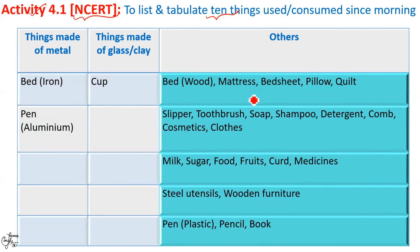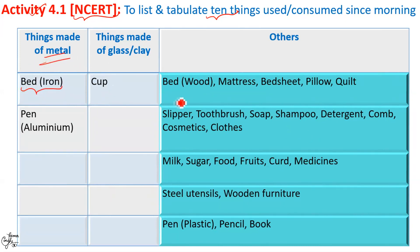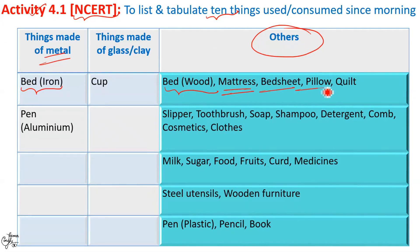Now, I have tabulated a few common things here. You can always add to this list or subtract from it. There are more than 10 items listed. Suppose you look at this table — you got up from the bed. The bed could be made of iron, that's a metal, or it could be made of wood. Since wood doesn't belong to metal or glass or clay, we put it in the column of others. Mattress goes in others. Bedsheet, pillow, quilt — all in others.